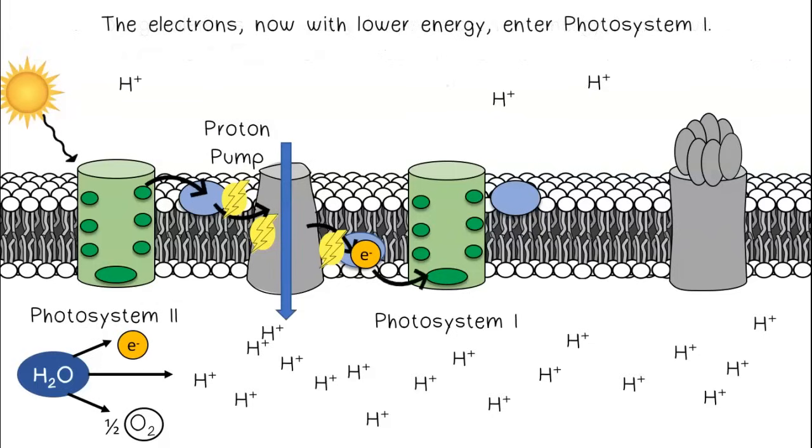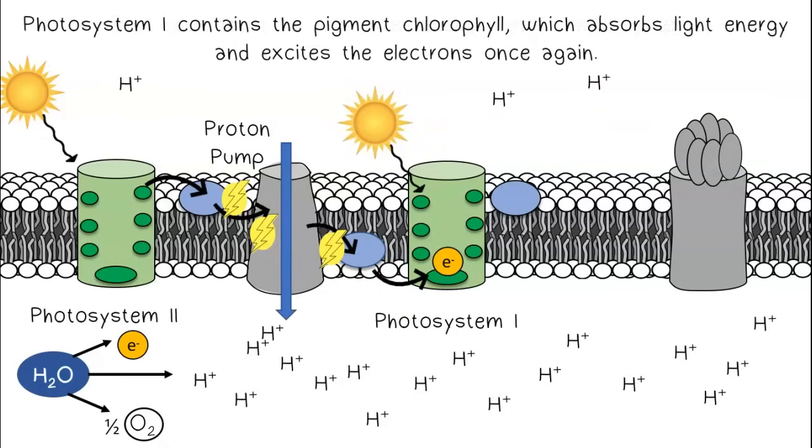The electrons, now with lower energy, enter Photosystem I. Photosystem I contains the pigment chlorophyll, which absorbs light energy and excites the electrons once again.